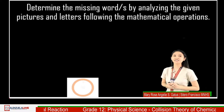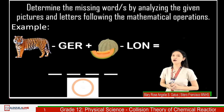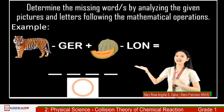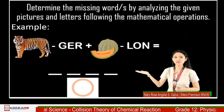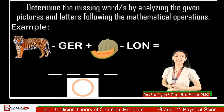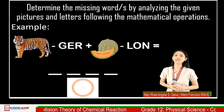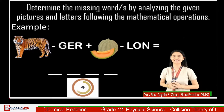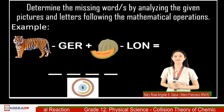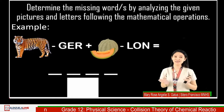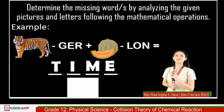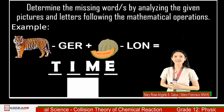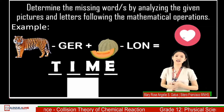Let us analyze the first problem. We have: a tiger minus 'ger' plus melon minus 'lon' is equal to — what do you think is the answer? Kindly comment it below, and your timer starts now. Time's up. The correct answer is... Time. Very good. Are my instructions clear?